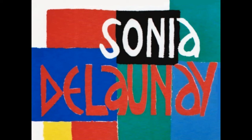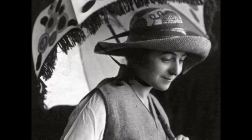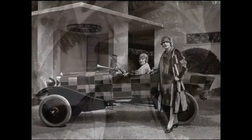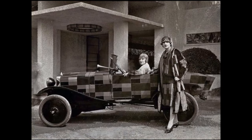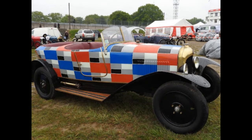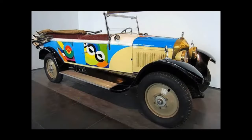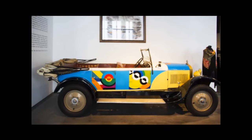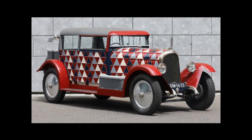Sonia Delaunay was an artist who was known for her use of geometric shapes and designs in fashion, painting and textiles. In 1924 she designed a pattern with geometric shapes and bright colors that was meant to be the paint design for the Citroën B12. Throughout the 1920s and beyond she included automobiles as a canvas for her modern art style. These are but a few of her stunning designs.